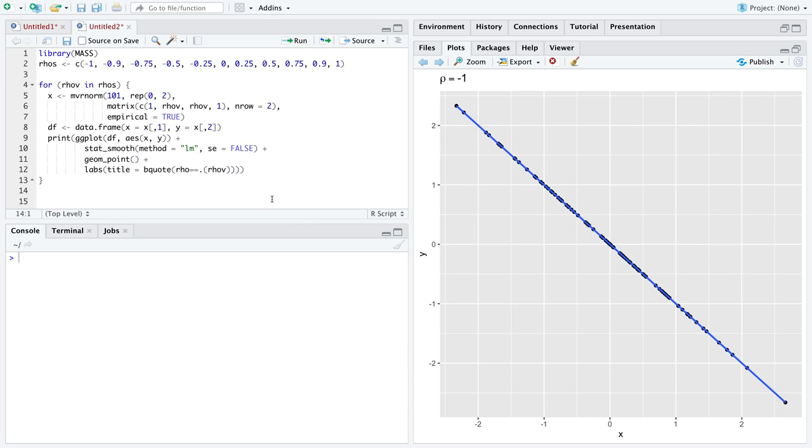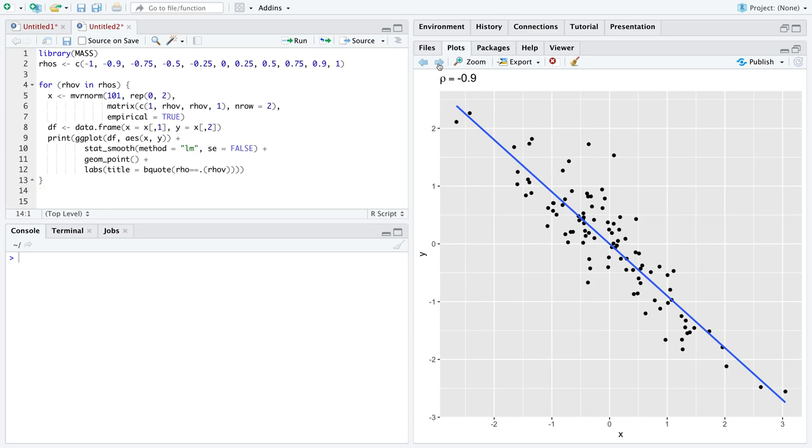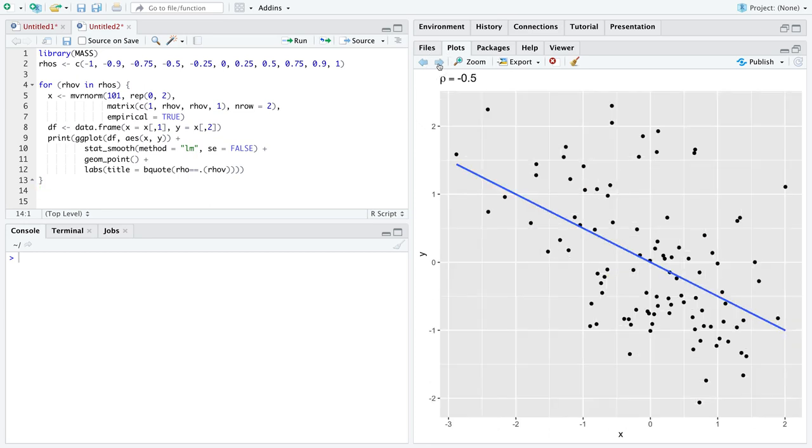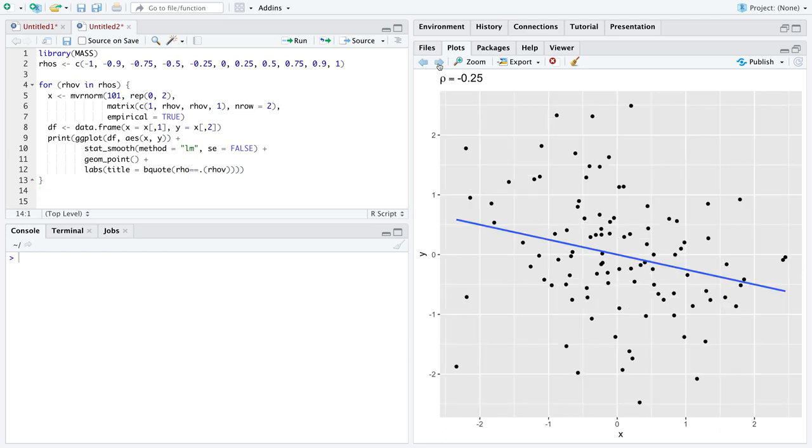But other than that, you can run this code on your own machine. It might take a minute to run. And then you can just navigate your way through these various plots to give you a better sense of the values that correlation can take on and the associated plots for those values.